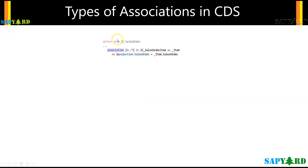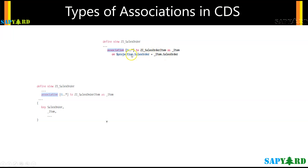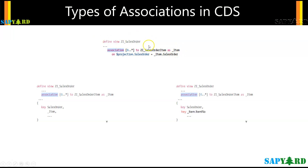If you see this slide, there is a keyword called 'association'. After the association, we have the cardinality which is zero to star, and then the target table or target view: underscore_item. This is the name of the association for this table, and then we have a join condition — on the projected field that is selected at the bottom, sales order, to join the association sales order. This is the complete definition.